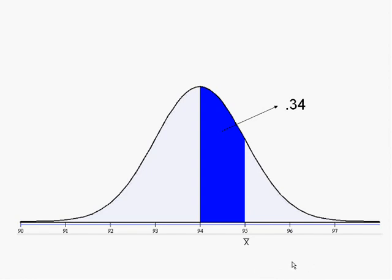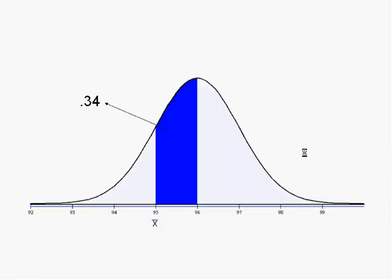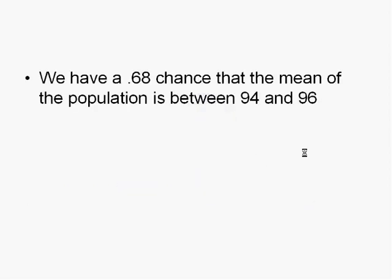Now the question is: if the mean of all these distributions has been 94, what is the chance that the sample we took has a mean of 95? We know that chance — the chance of being one standard deviation from the mean — and that's 34%. Also, there is another chance that the mean of the population has been 96, therefore the mean of the sample distribution is also 96, and by accident the sample in our hand has an average of 95 milliliters. There is another 34% chance for this. So in general, we can say we have a 68% chance that the mean of the population is between 94 and 96.